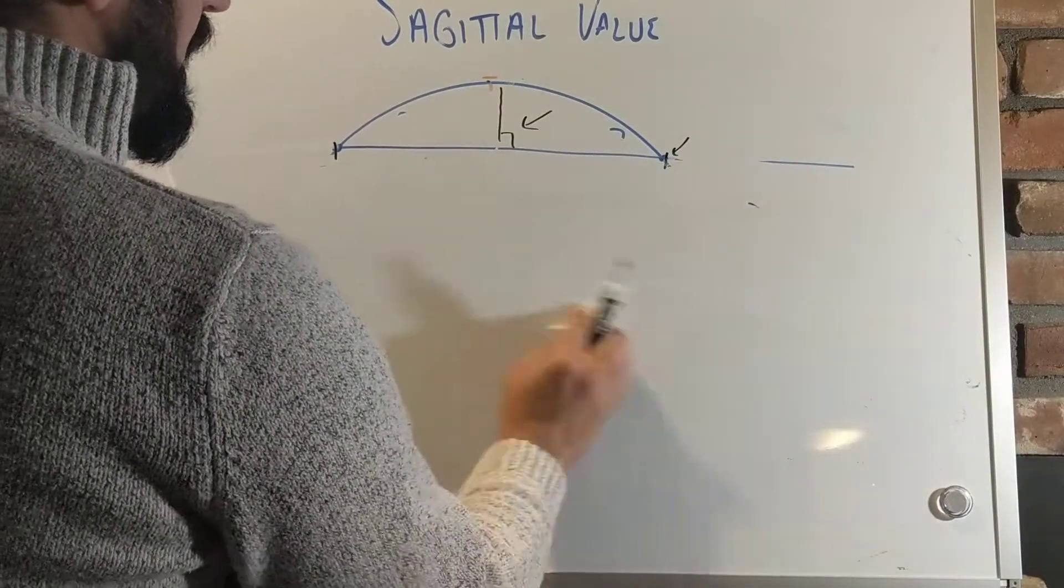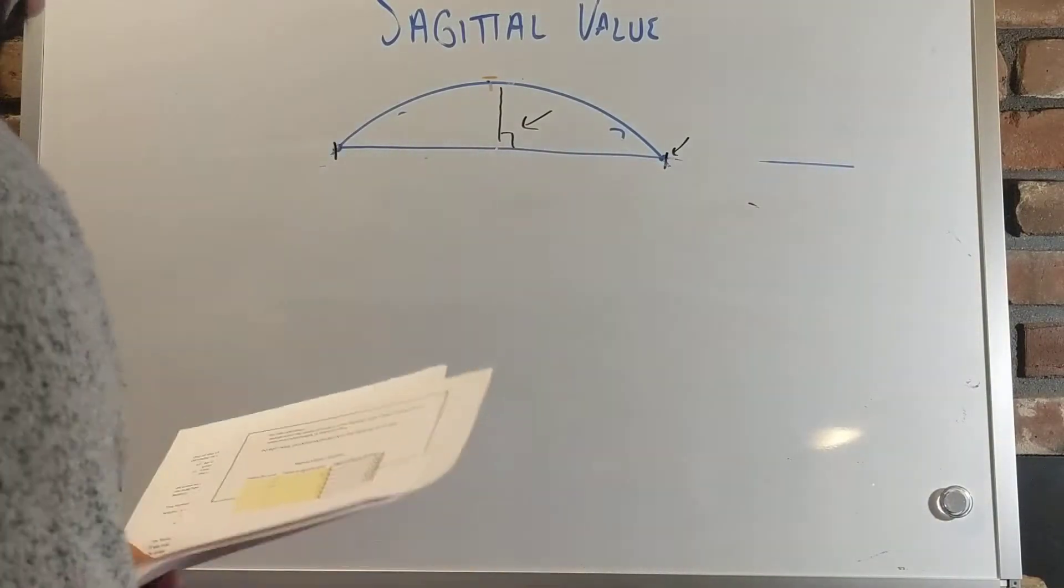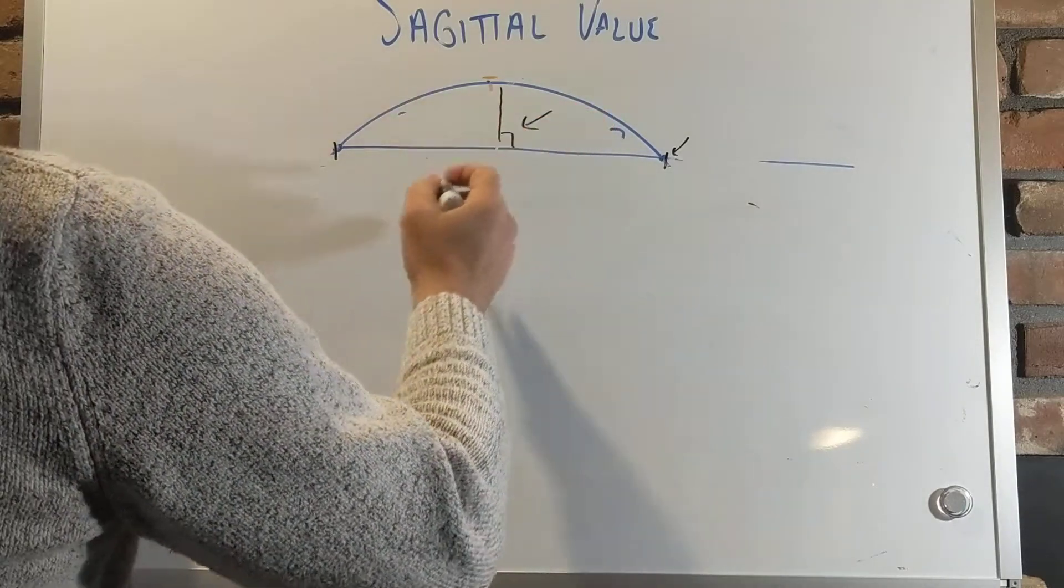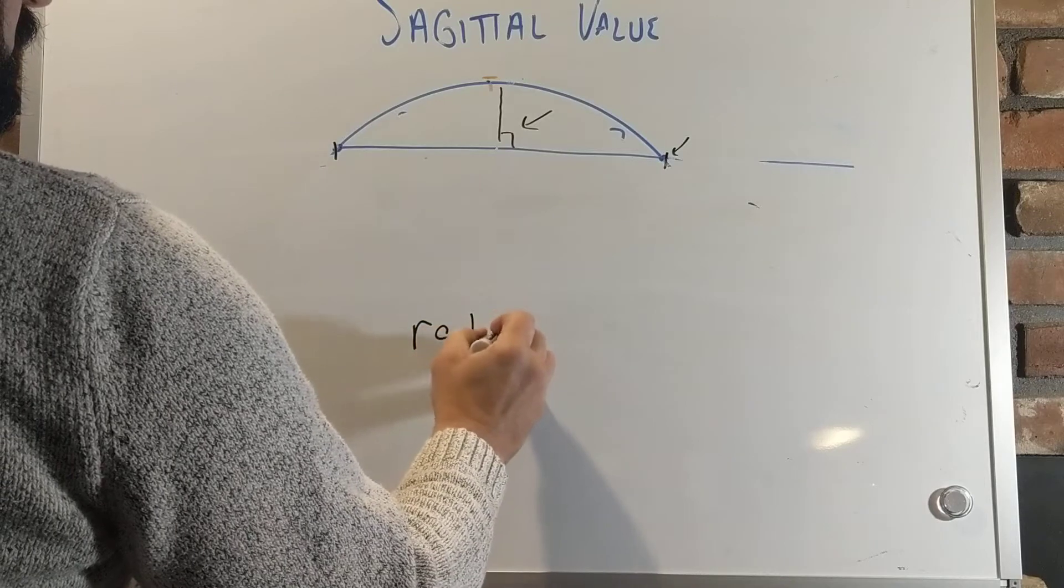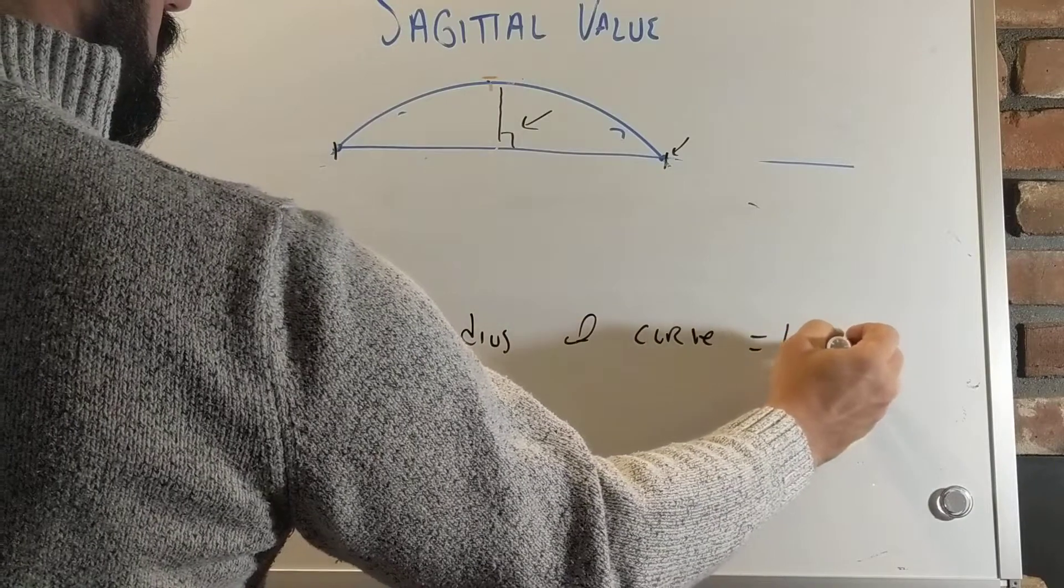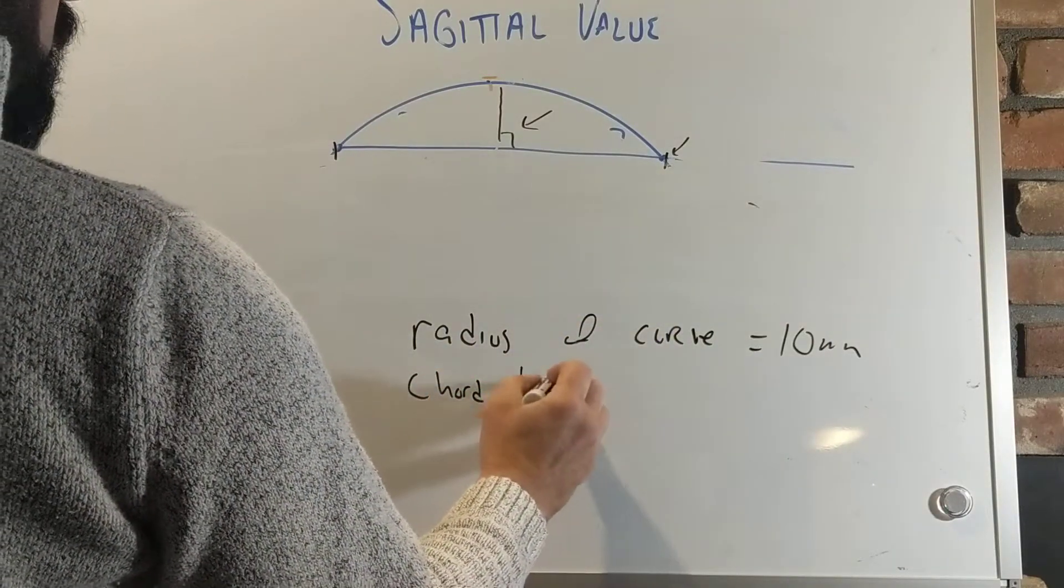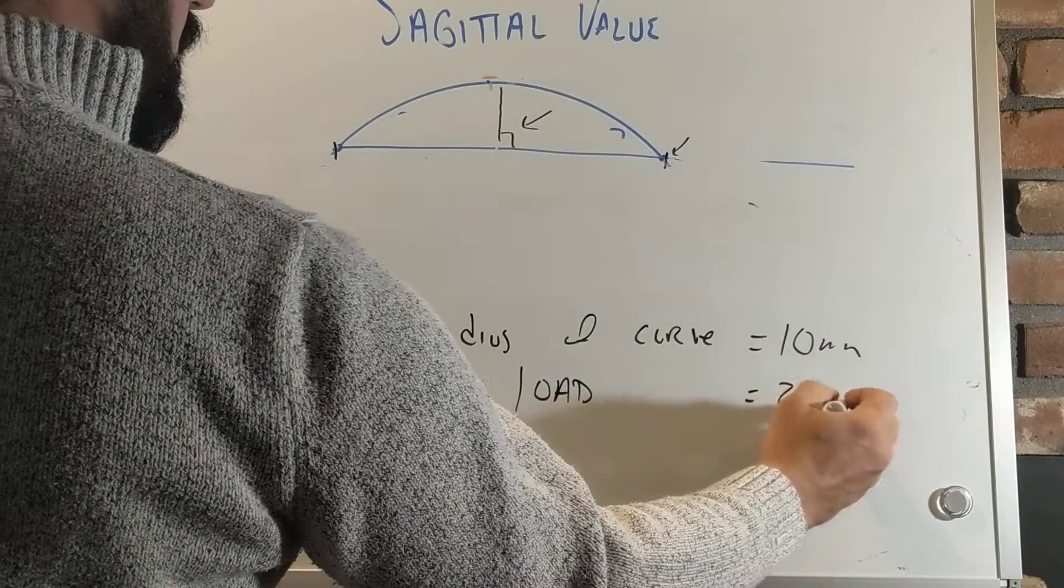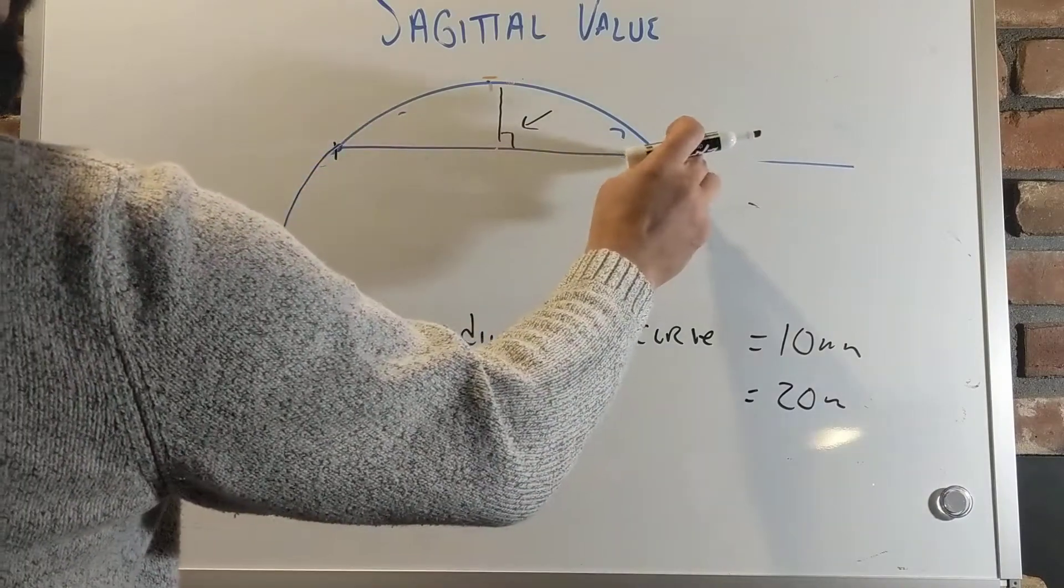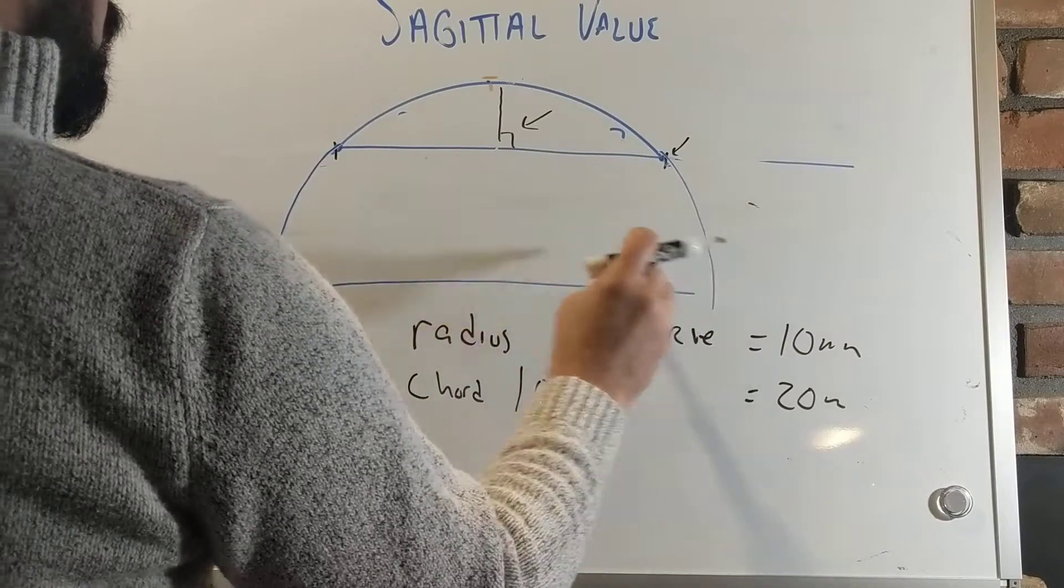In this case, you can follow along if you have the Excel, if not, understand that my numbers here are pretty accurate. So if I had the same lens that had a radius of curvature of 10 millimeters, and I had a chord length, or an overall diameter, of 20 millimeters, that would simply be the entire semicircle we were talking about before. This would be the center.